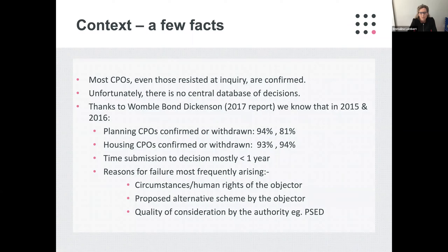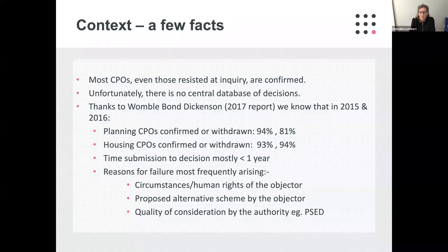Womble Bond-Dickinson produced a report in 2017 relating to CPOs in 2015 and 2016. From it we know that 94% of planning CPOs were confirmed or withdrawn in 2015 and 81% in 2016. In relation to housing CPOs, 93% were confirmed or withdrawn in 2015 and 94% in 2016. The time from submission to decision was mostly under one year. For unopposed housing CPOs the time to confirmation is around two months, and for an unopposed planning CPO about three months.